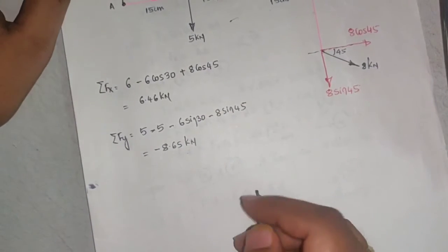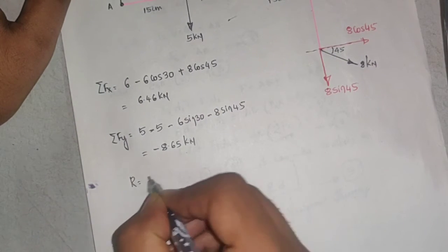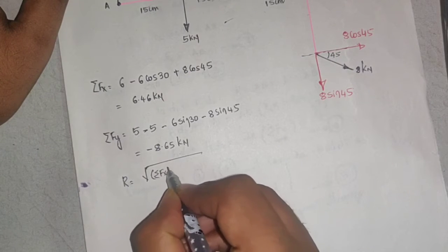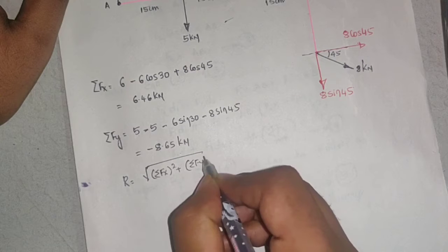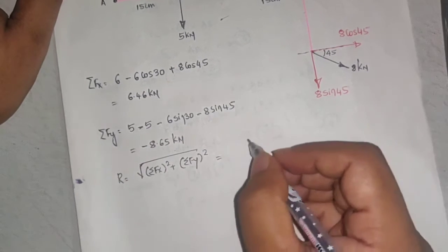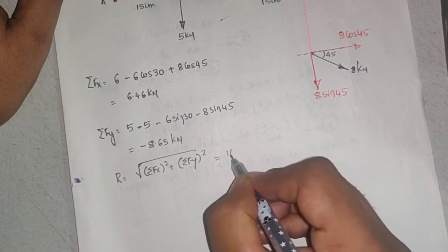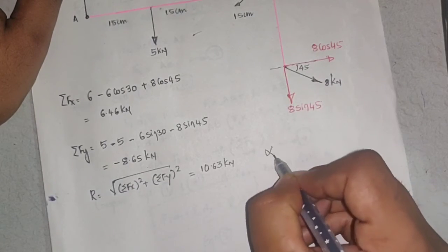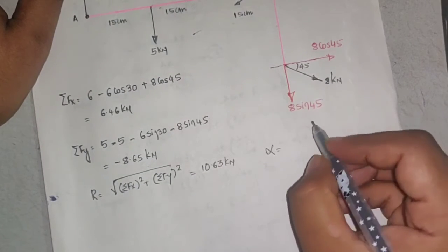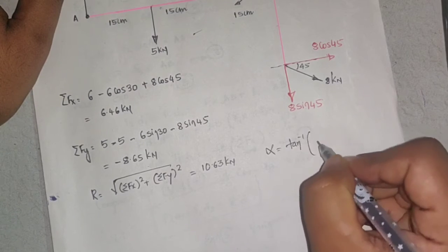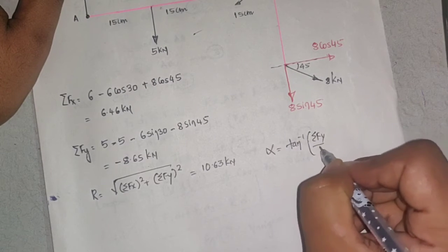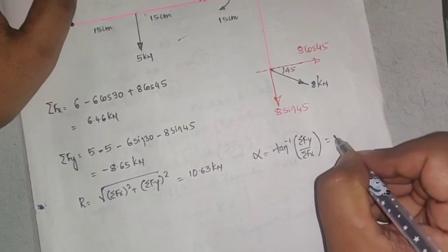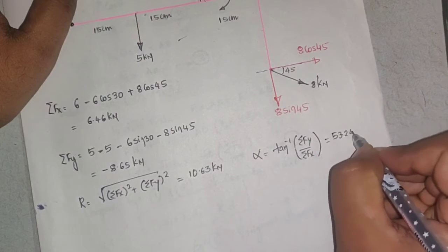Find the resultant: R = √(ΣFx² + ΣFy²) = 10.63 kN. The direction is α = tan⁻¹(ΣFy / ΣFx) = 53.24 degrees.